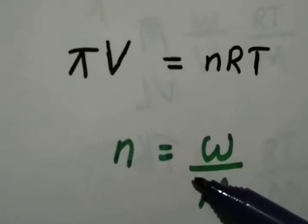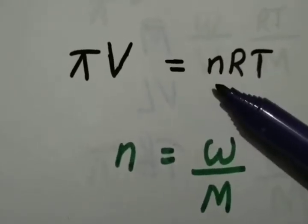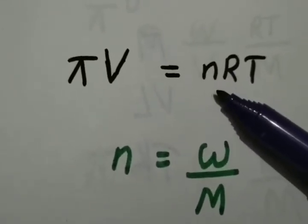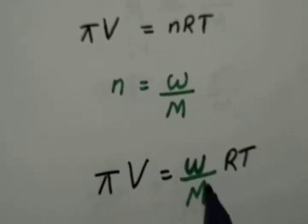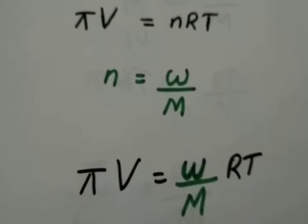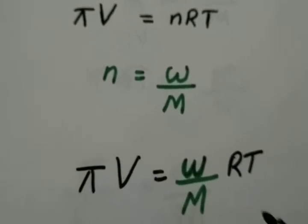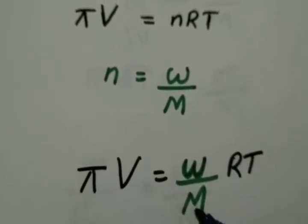Substituting the value of n in Van't Hoff osmotic pressure equation, then we get πV is equal to W by M RT. From this we can calculate the molecular mass of the solute.